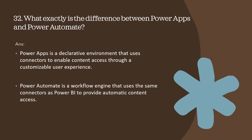Question 32: what exactly is the difference between Power Apps and Power Automate? Power Apps is a declarative environment that uses connectors to enable content access through a customizable user experience, while Power Automate is a workflow engine that uses the same connectors to provide automatic content access.